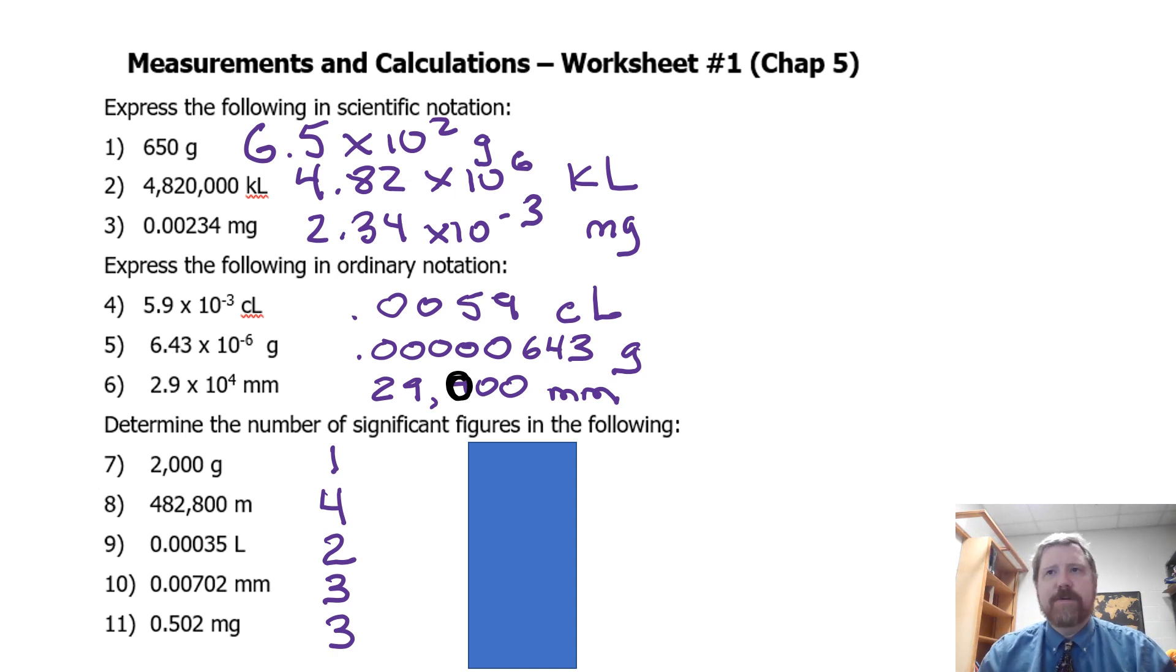Now when we get to number 5, we have our significant figures rules. And I prefer to use the acronym thing. What's the yellow? Who picks the yellow to write with? Where's the pen?